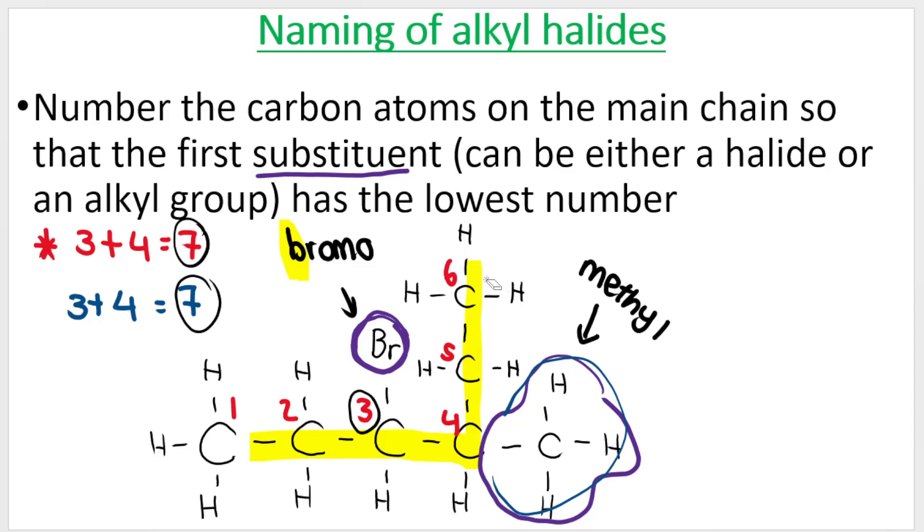I'm going to erase the blue numbering and go with the red numbering. So how do I name this? This is going to be 3-bromo-4-methyl. Then how many carbons in the main chain? 6. So hexane.